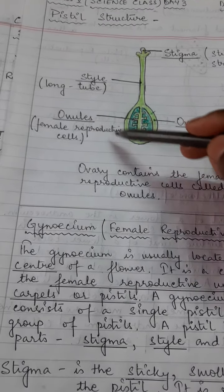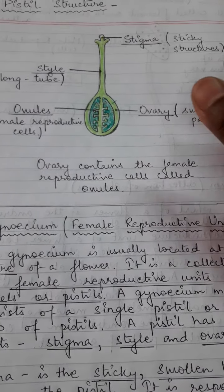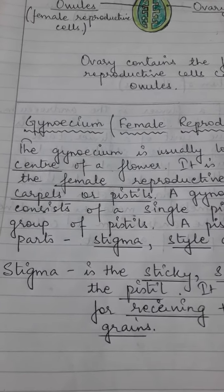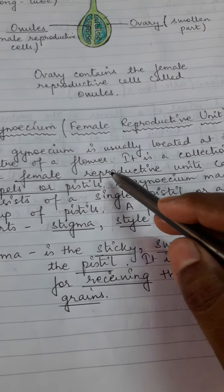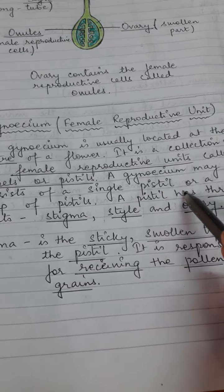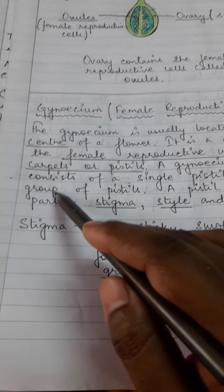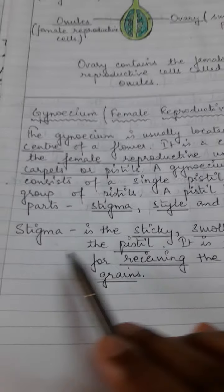Now let's get to the definition of Gynoecium. Gynoecium is usually located at the center of the flower. It is the collection of the female reproductive unit, called carpels or pistils. Gynoecium may consist of a single pistil or a group of pistils. A pistil has three parts: stigma, style, and ovary.